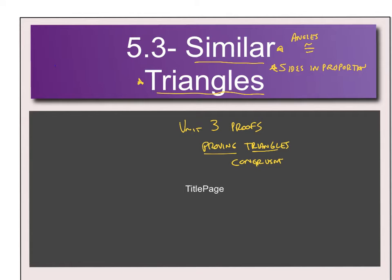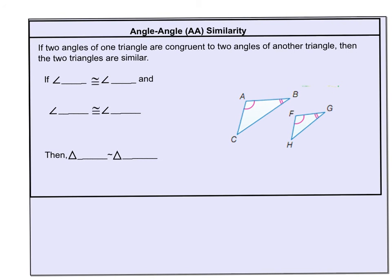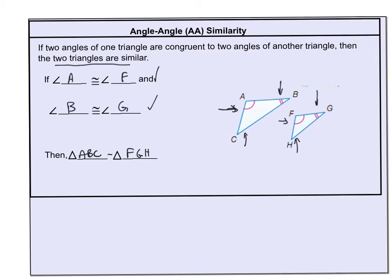Now we're going to talk about proving triangles similar — that's what this section is about. If we have a triangle and two angles that are congruent to two other angles, then the two triangles are similar. So if angle A is congruent to angle F, and angle B is congruent to angle G, then by the third angle theorem the third angles must also be equal. So all three angles are equal, and triangle ABC is similar to triangle FGH. Angle-Angle is enough to tell us those two triangles are similar.